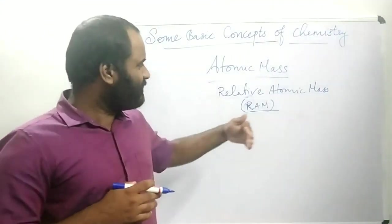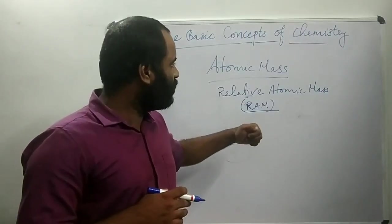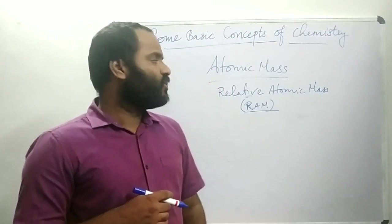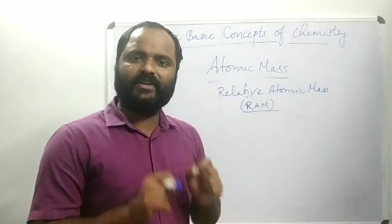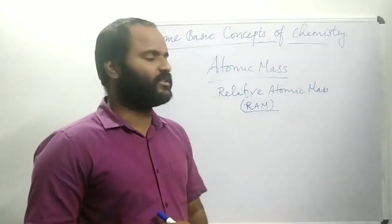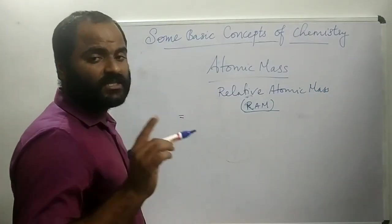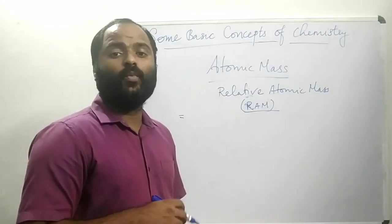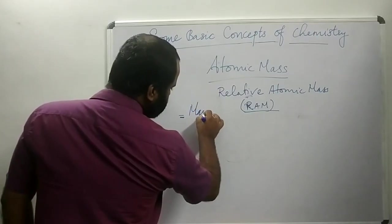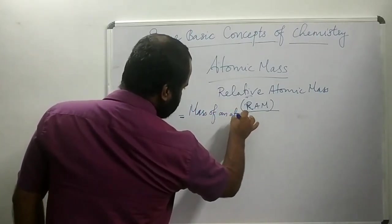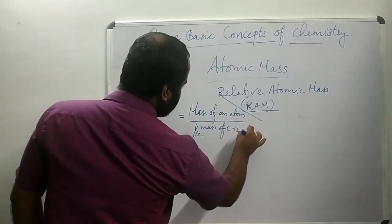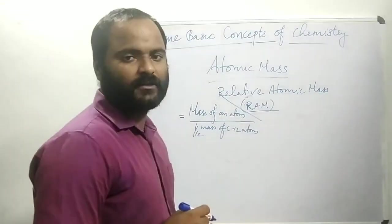What is atomic mass? Atomic mass is calculated on a standard scale by comparing with the carbon-12 atom. Atomic mass is the mass of an atom which is how many times heavier than 1/12th the mass of a carbon-12 atom. Mathematically: Atomic mass = mass of an atom divided by 1/12th mass of carbon-12 atom.